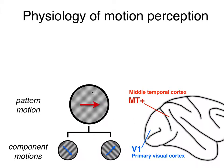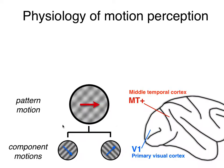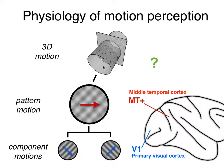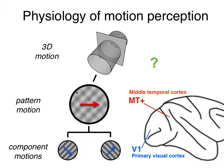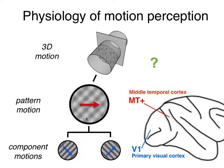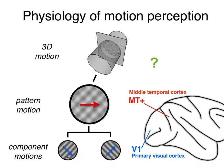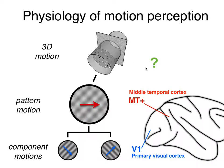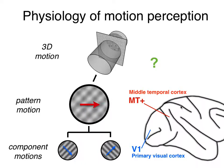Our question when we started this research was: can we see what happens subsequently to these pattern motion signals? Whenever something is moving in three dimensions, we get a motion signal in one eye and another motion signal in the other eye. These have to be combined in a similar way that component motion signals are combined into a pattern motion signal. Our question is: can we find a location in the brain where that combination happens?